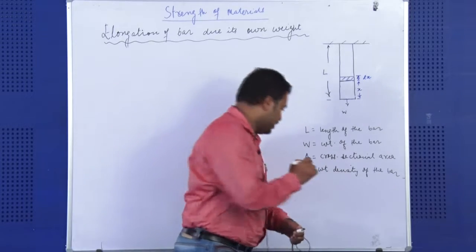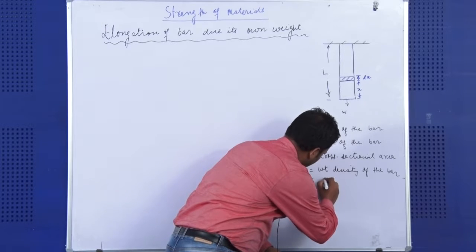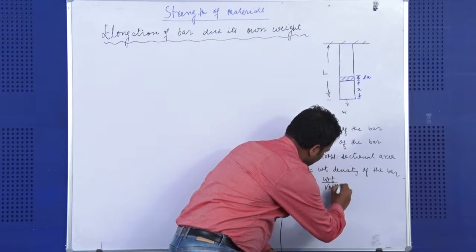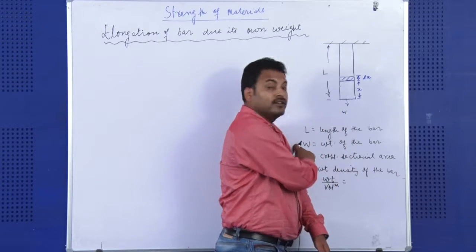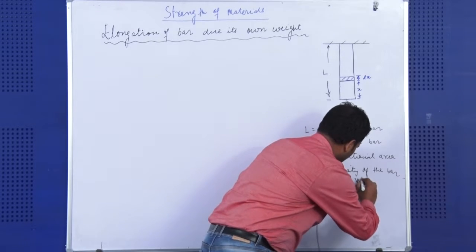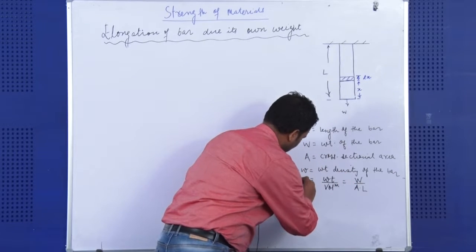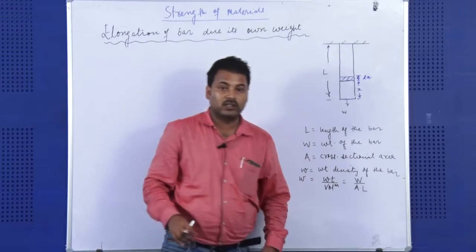As I think you all know, weight density is equal to total weight by volume. In this case, we can write total weight W, and volume would be equal to area into length. So this will be the value of weight density over here.